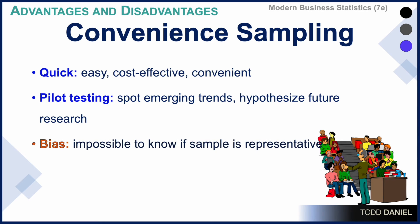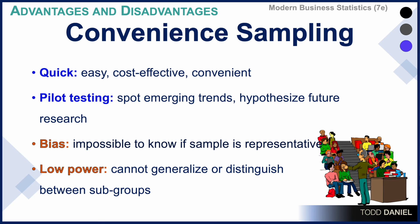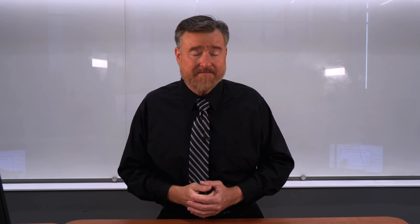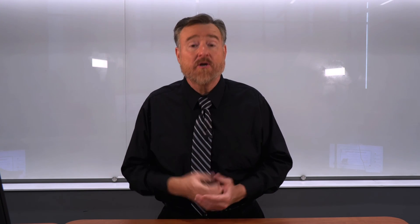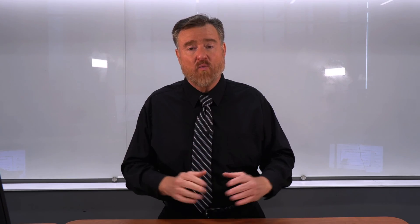A disadvantage of convenience sampling is the bias — it's impossible to know if this convenience sample is representative of a population. And it is low power: it does not allow us to generalize or to distinguish between subgroups. Convenience sampling is very convenient, which is why it gets used so much. But we must use convenience sampling with care.